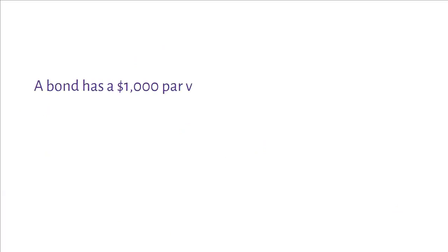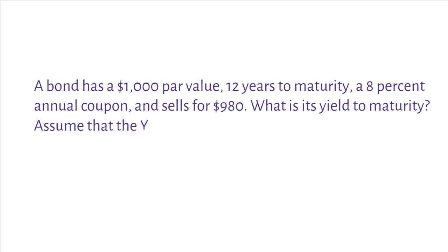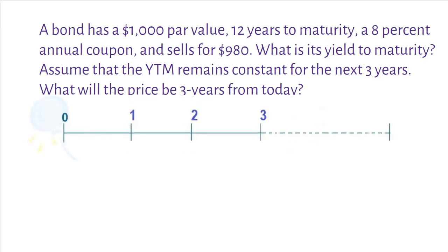A bond has a $1,000 par value, 12 years to maturity, an 8% annual coupon, and sells for $980. What is its yield to maturity? Assume that the YTM remains constant for the next 3 years. What will the price be 3 years from today? Let's draw a timeline and see what are given and what we need to calculate.